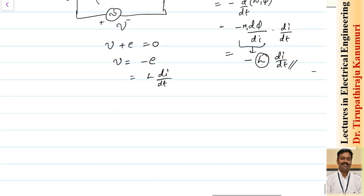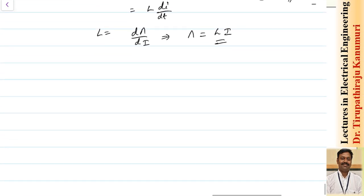Coming to self-inductance, L = dΨ/di. Assuming the flux linkages vary linearly with current, the total flux linkages Ψ = L·i. We will use this relationship going forward.